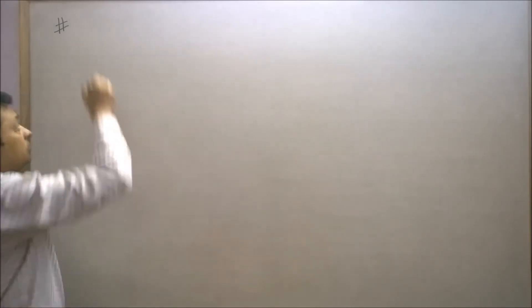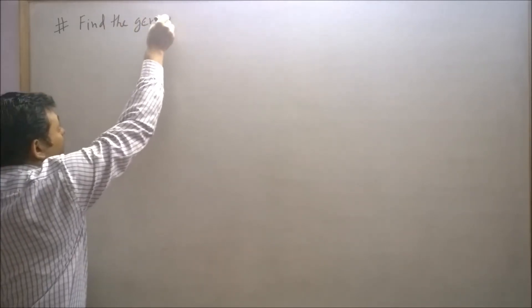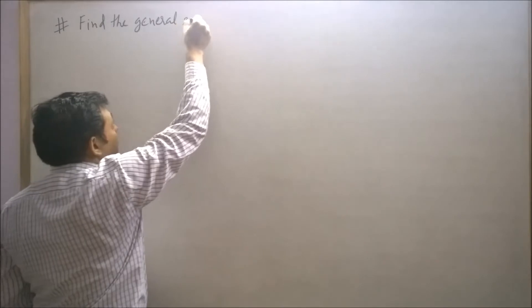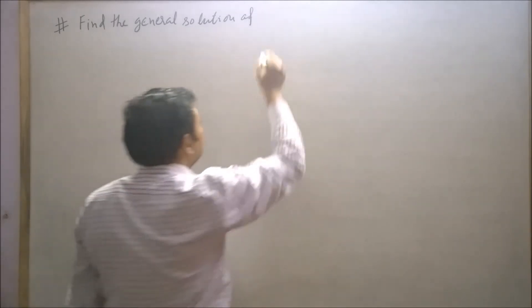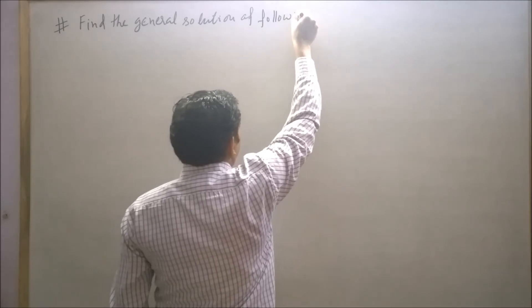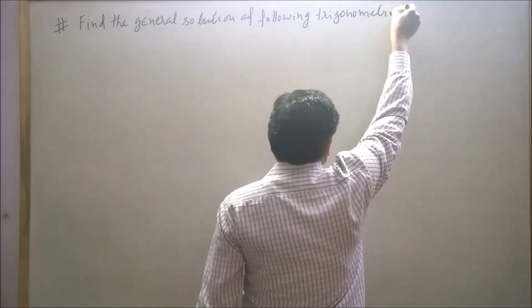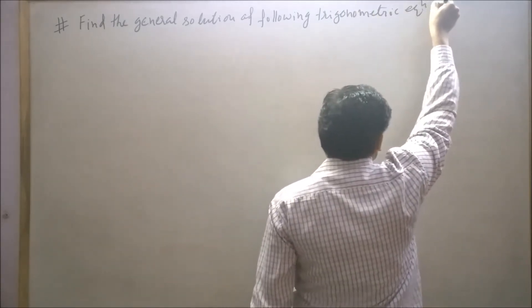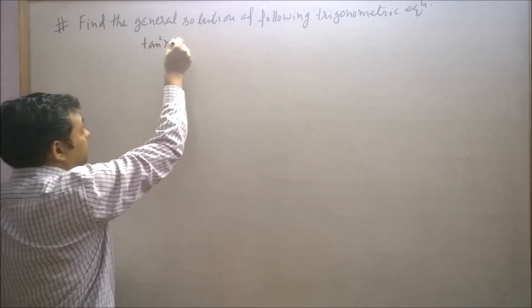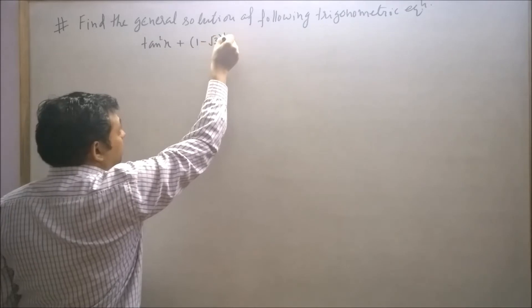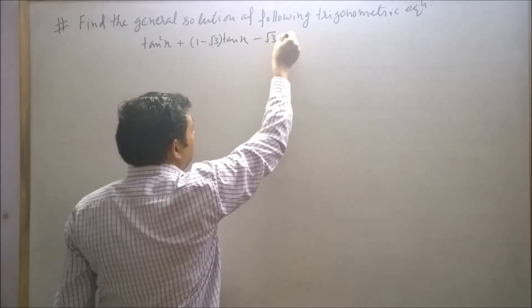The question says: find the general solution of the following trigonometric equation: tan²x + (1 - √3)tanx - √3 = 0.